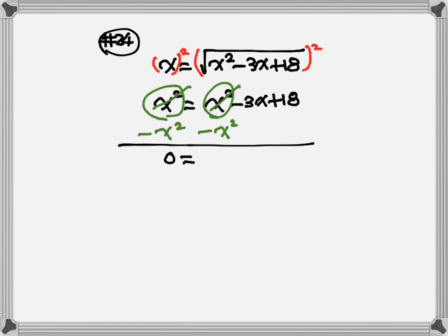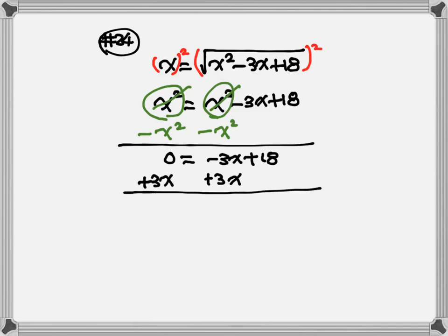So, 0 is equal to negative 3x plus 18. Let's get rid of the negative 3x: plus 3x on both sides. So, 3x is equal to 18. Divide by 3, so x is equal to 6.